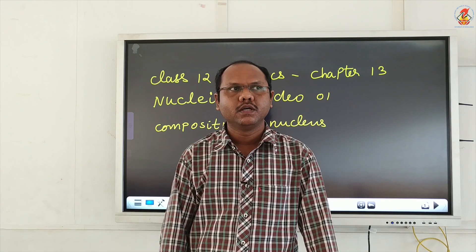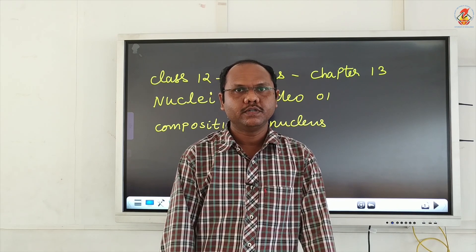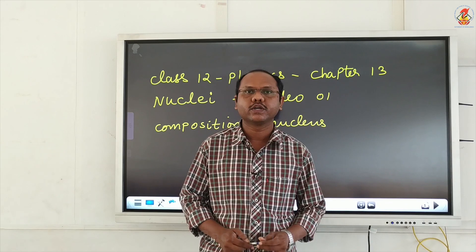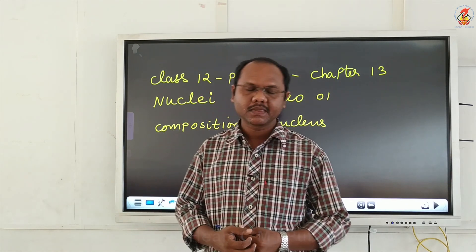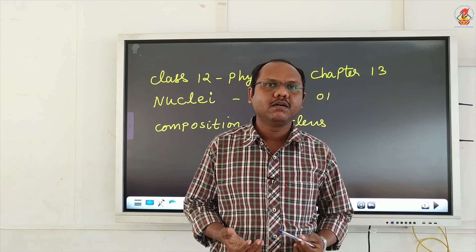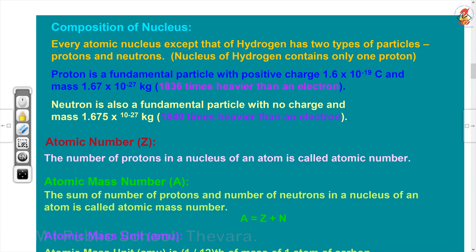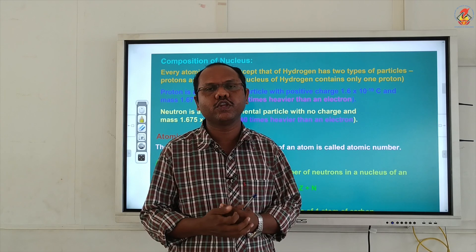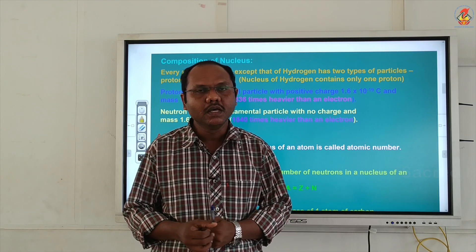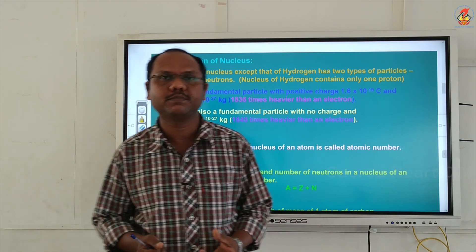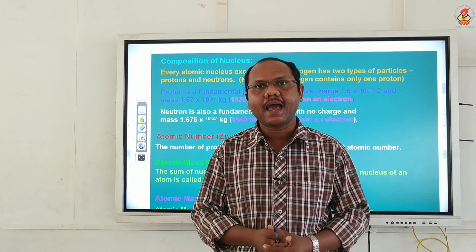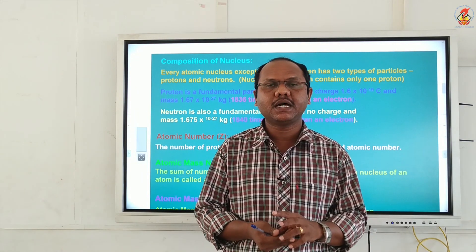Good morning students. Today we are going to start a new chapter: nuclei. Let us first see what is the composition of the nucleus. Every atomic nucleus except hydrogen has two types of particles: protons and neutrons. Hydrogen has only one particle, that is protons — there are no neutrons in hydrogen. So the nucleus consists of positively charged particles called protons and uncharged particles called neutrons.